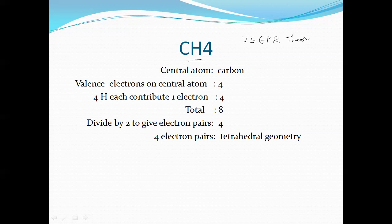As the name suggests, this theory is totally based on the presence of the valence electrons — that means lone pairs or bond pairs — and the repulsion between these valence electrons. The repulsions may be between bond pairs and bond pairs, lone pairs and bond pairs, or lone pair and lone pair repulsions.